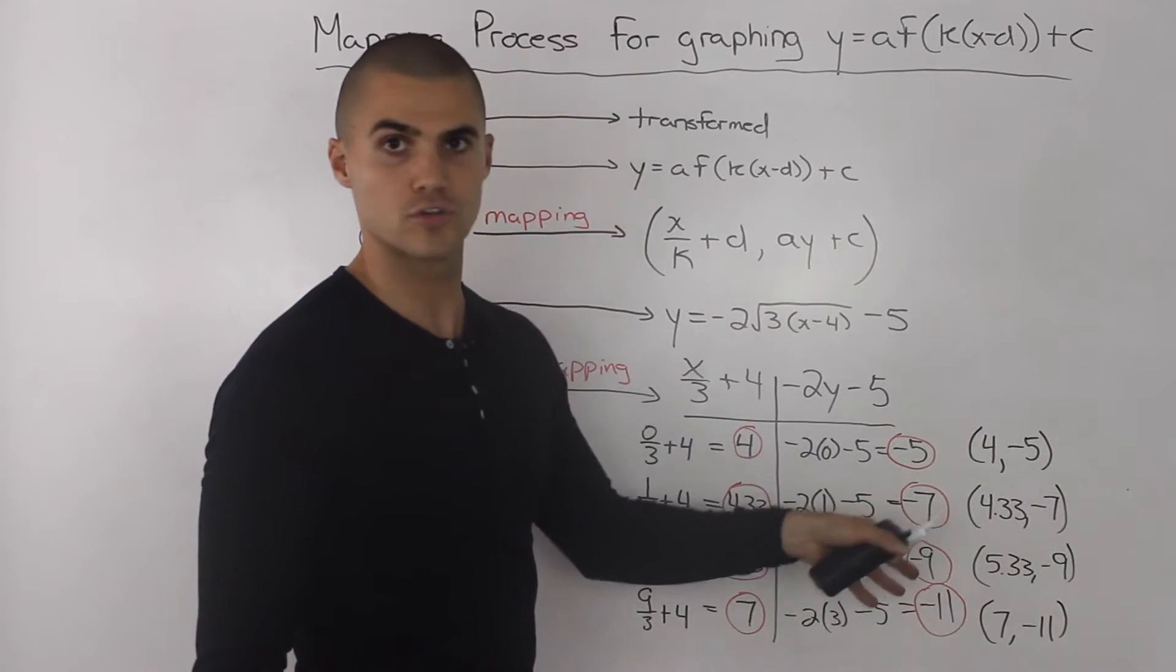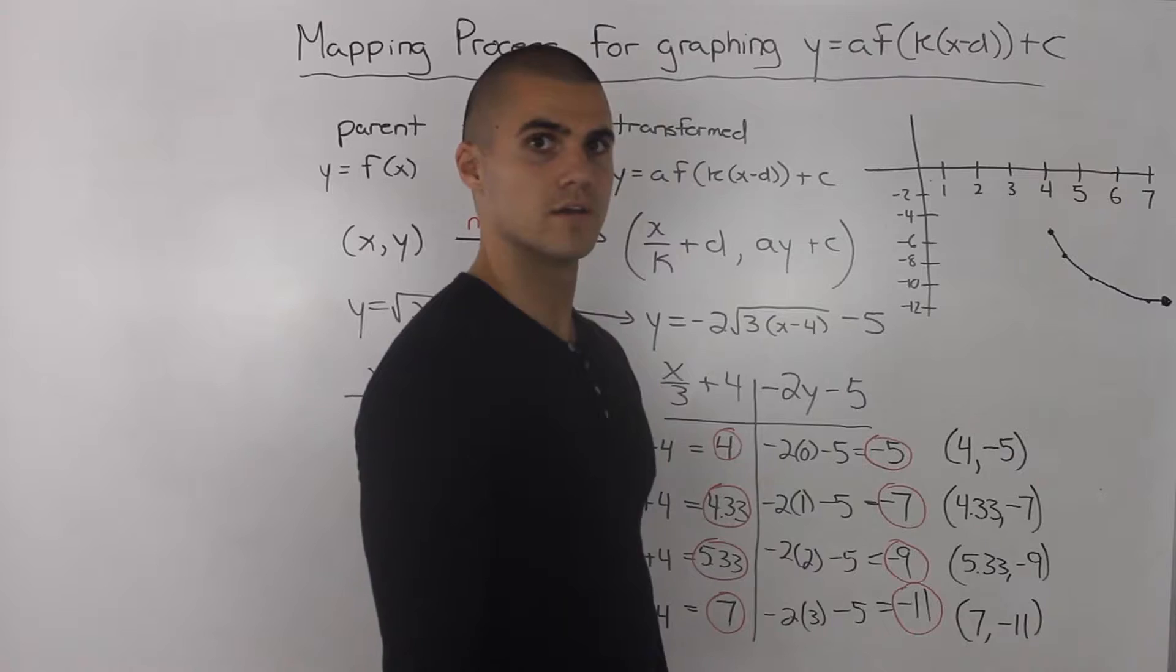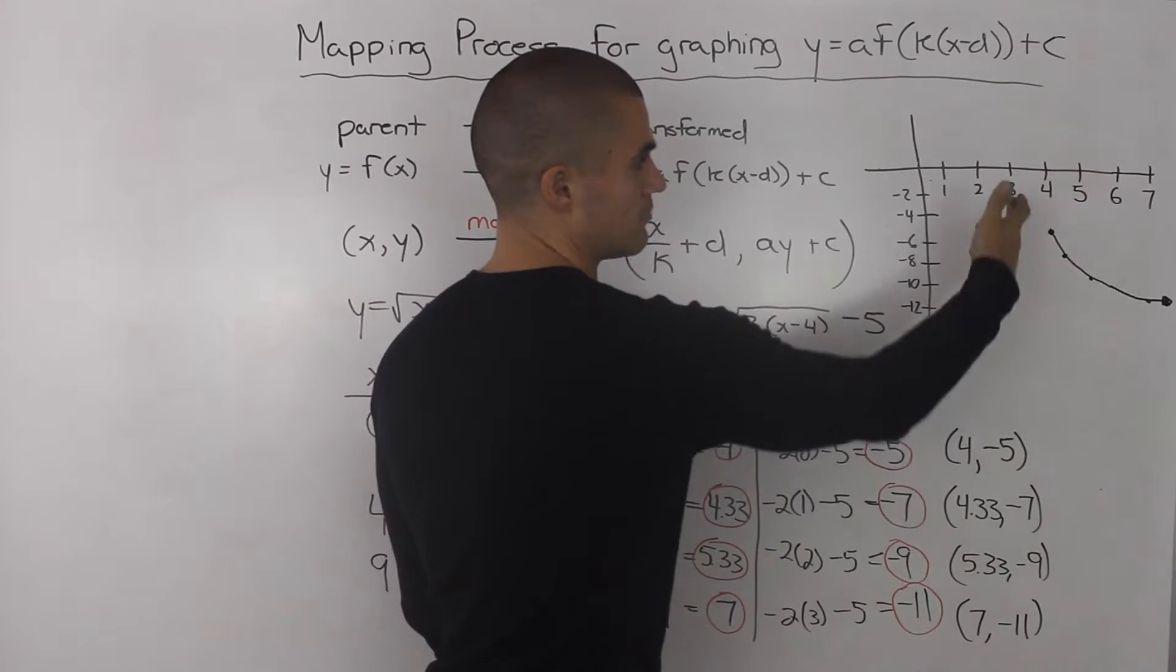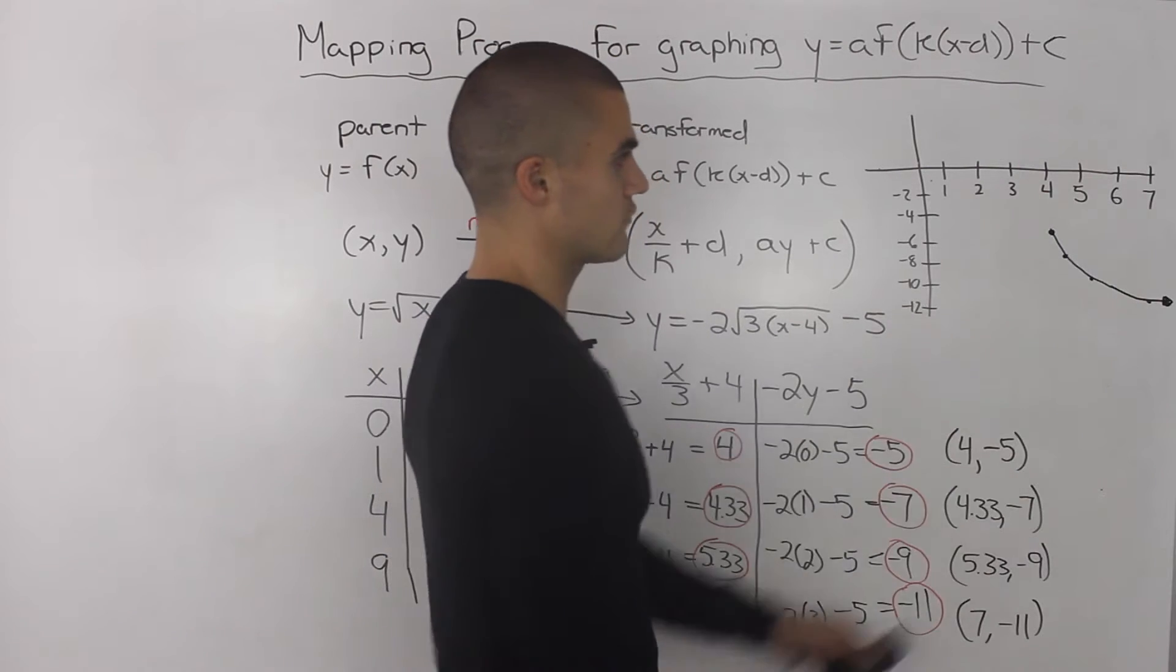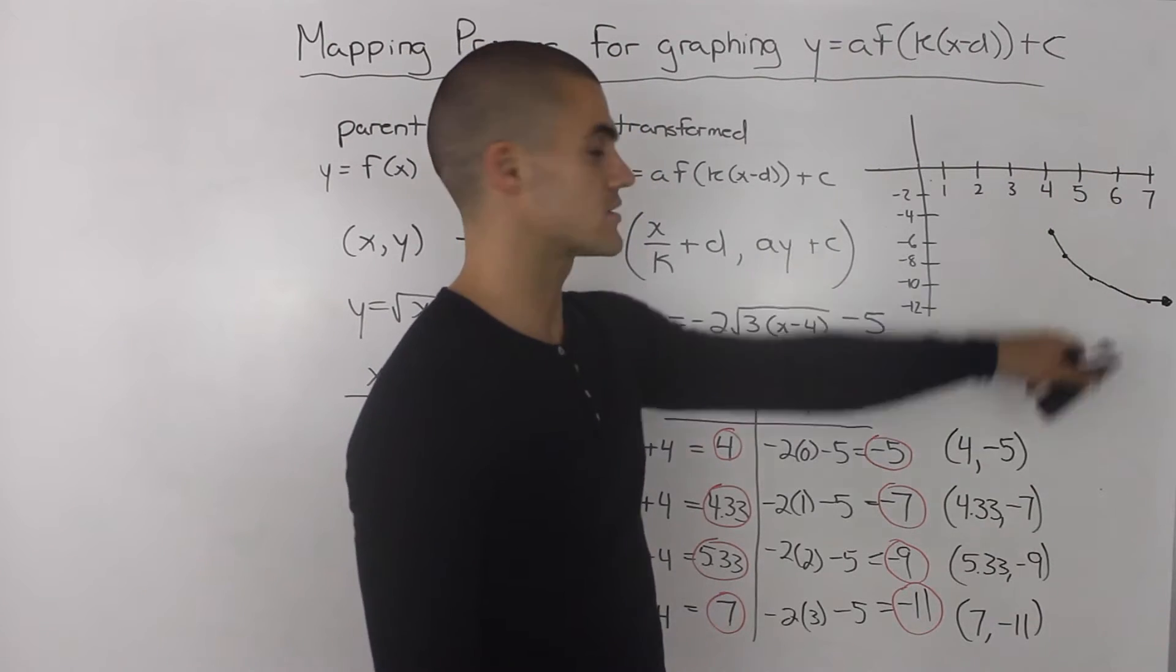These points here represent the points on this transform function. Now, all we have to do is just plot them. Taking these transform points and plotting them and then drawing the graph, we end up with this result.